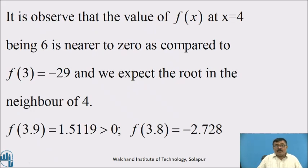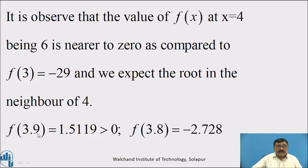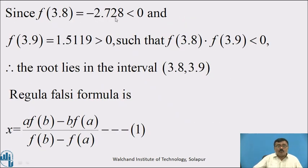It is observed that f(4) = 6 is nearer to 0 compared to f(3) = −29, and we expect the root in the neighborhood of 4. Substituting values between 3 and 4: f(3.9) = 1.519, which is greater than 0, and f(3.8) = −2.728, which is negative. Since f(3.8)·f(3.9) < 0, the root lies in the interval (3.8, 3.9).